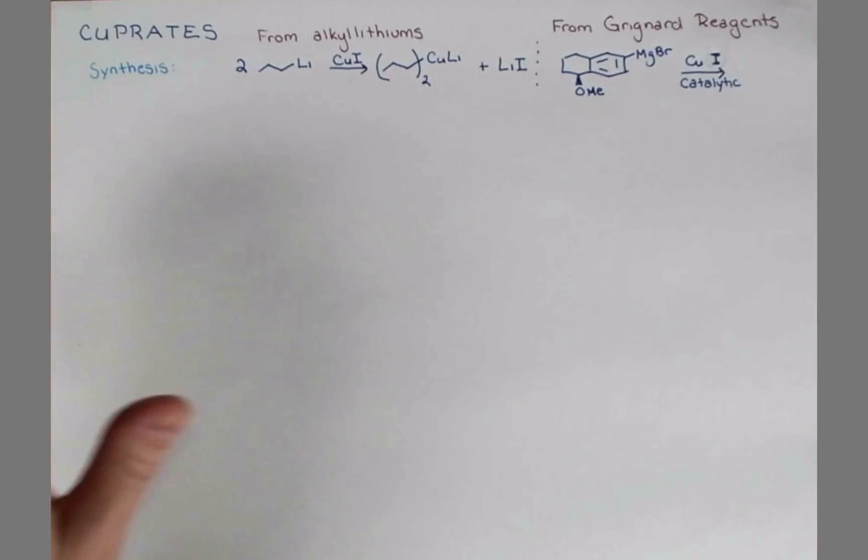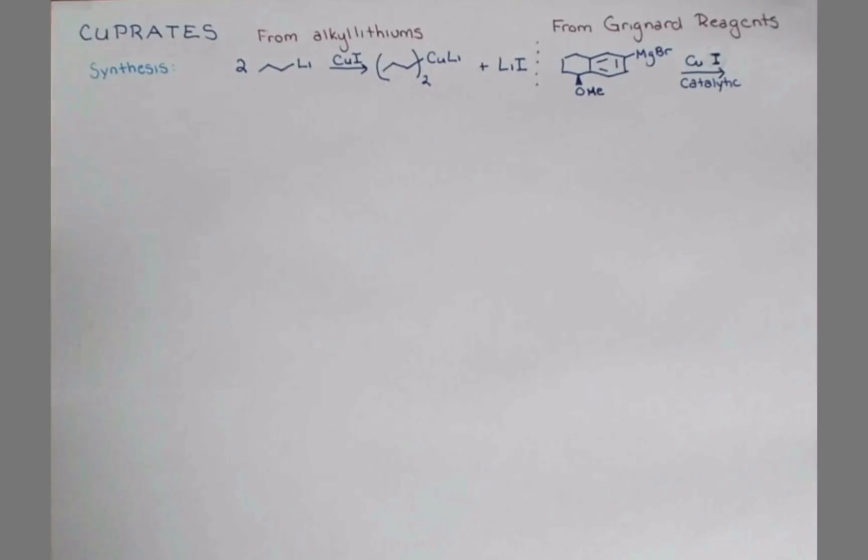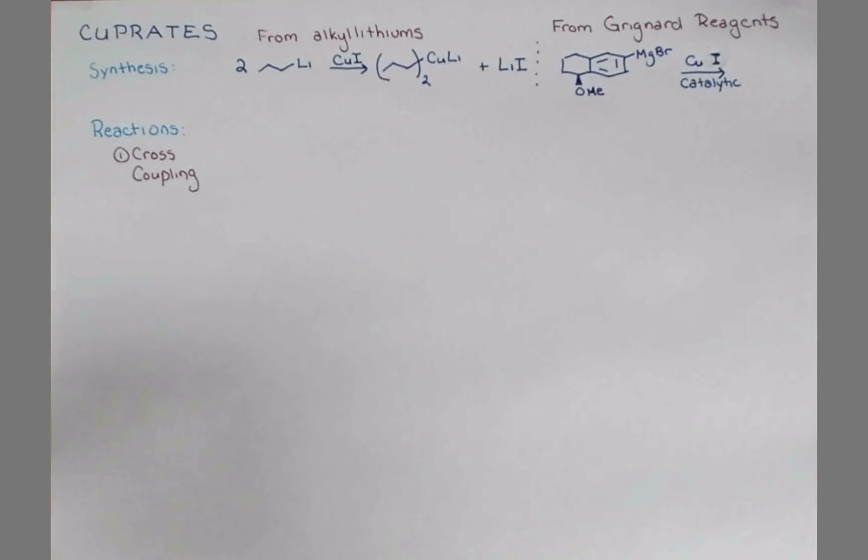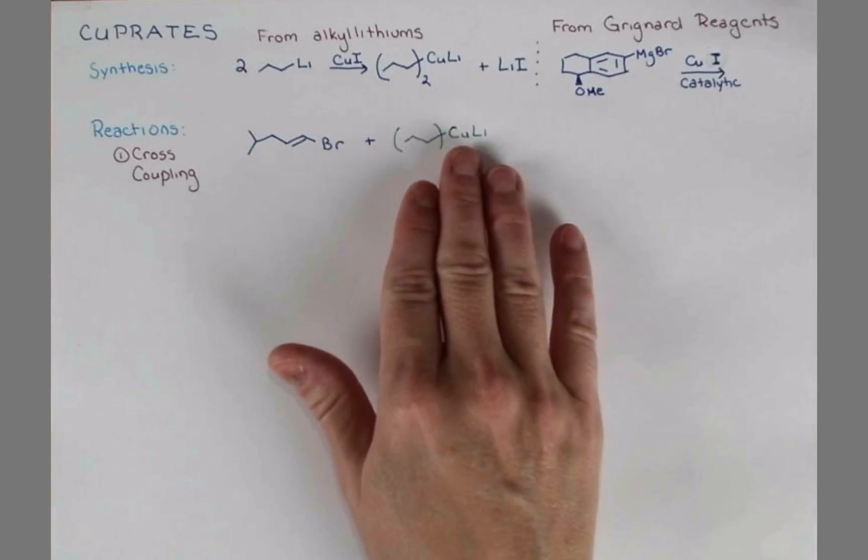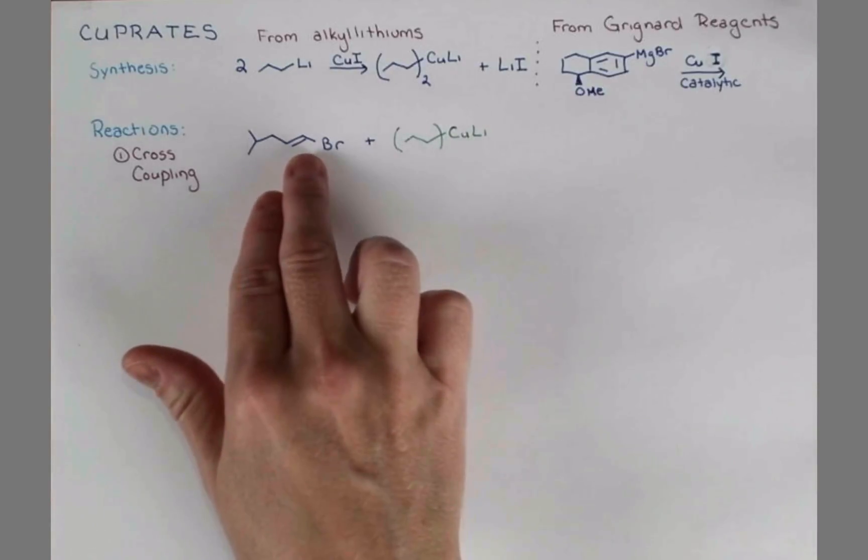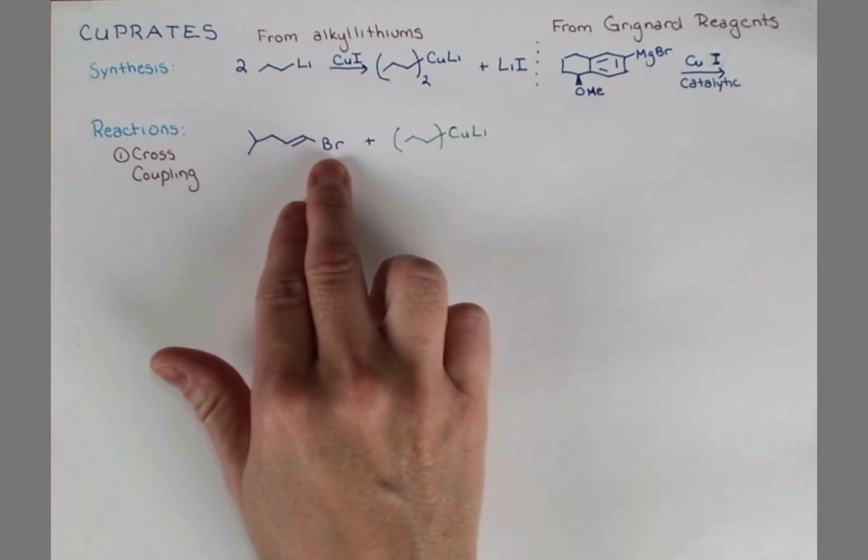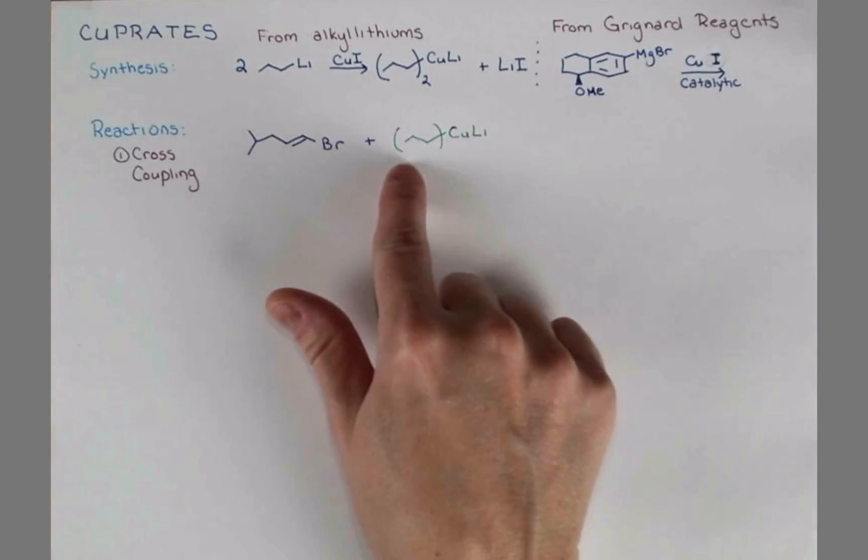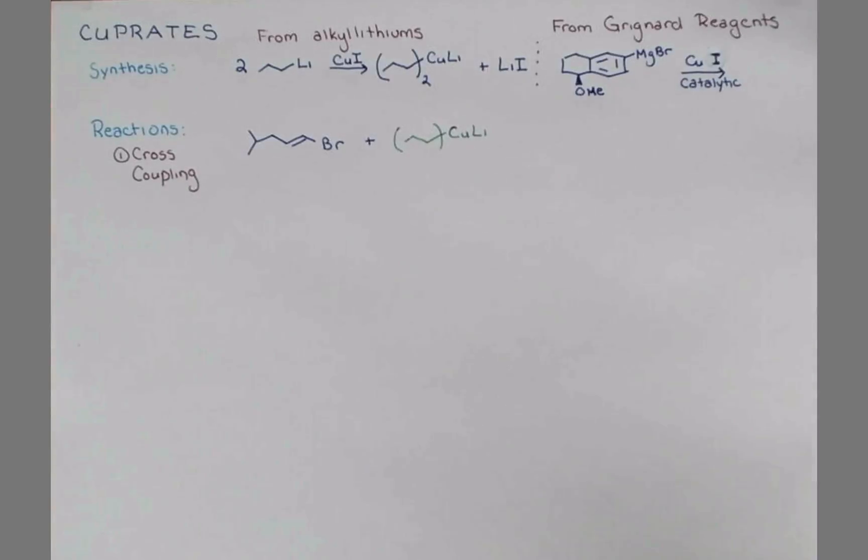Okay, now we know how to make these, but why would we want to make these? Let's look at the unique reactions that cuprates can perform. Cuprates participate in cross-coupling reactions. In this reaction, the copper can insert itself into this carbon-bromine bond. The copper eliminates itself, and basically we get these two pieces stitched together.